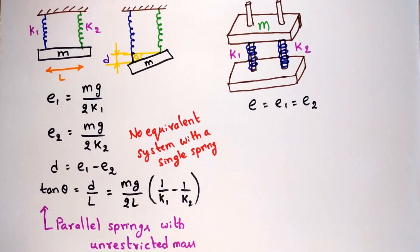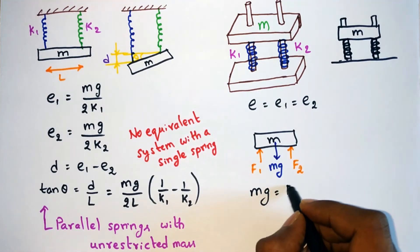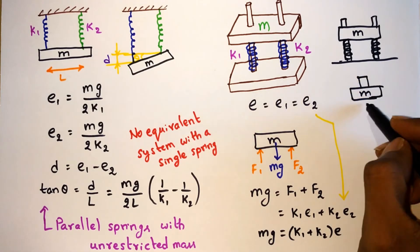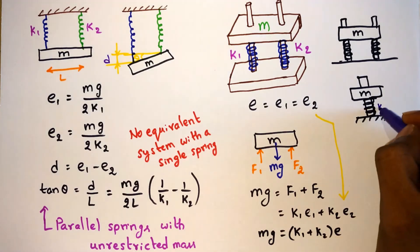Consider the free body diagram of mass M. Then we can write Mg equals F1 plus F2. And using Hooke's law, it can be rewritten as follows. Here the displacement of the mass and the spring's compression are equal. So for these two springs, it is possible to construct an equivalent spring-mass system.